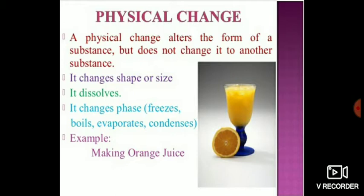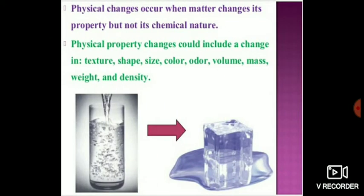By getting all these concepts, what should be the definition of physical change? A change in which there is no new substance formation takes place, and whether there is change in shape, size, volume, density, or in the state of any substance — this kind of change is considered as physical change. Or, how can we define physical change? It is a kind of change which occurs when matter changes its property, but not its chemical nature.